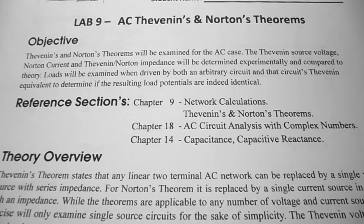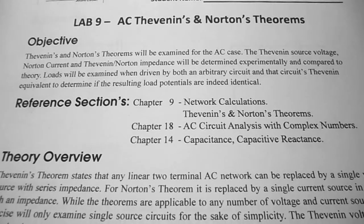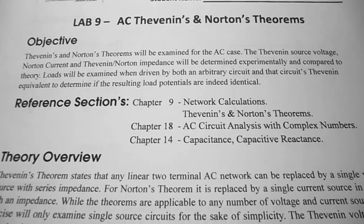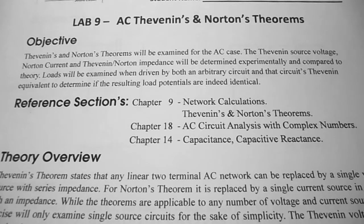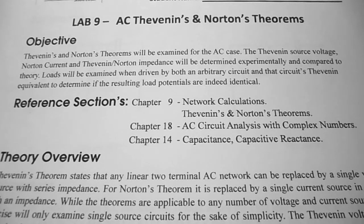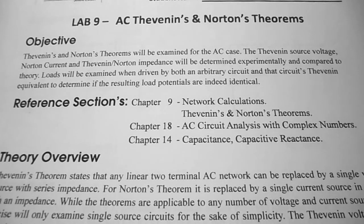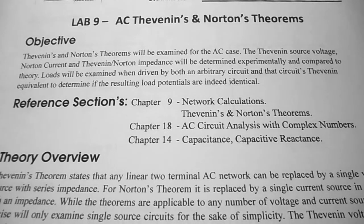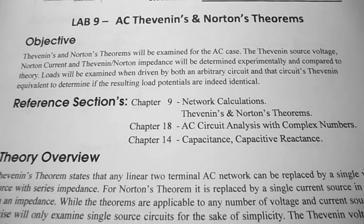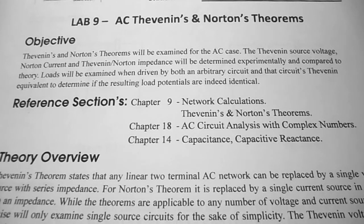Under reference sections, I'm referring to Sham's Outline's Basic Electricity, second edition. We need to review chapter nine on network calculations, Thevenin and Norton's theorems, chapter 18 on AC circuit analysis with complex numbers, and chapter 14 on capacitance and capacitive reactance.